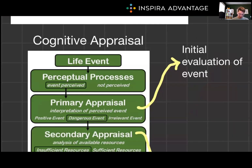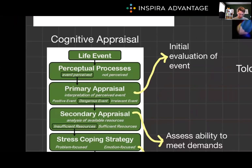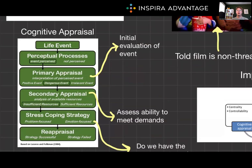The first step is Cognitive Appraisal. Cognitive appraisal involves evaluating the significance of an event based on its relevance to our well-being. This evaluation process can be both conscious and unconscious. Lazarus identified two types of appraisal: primary and secondary appraisal.